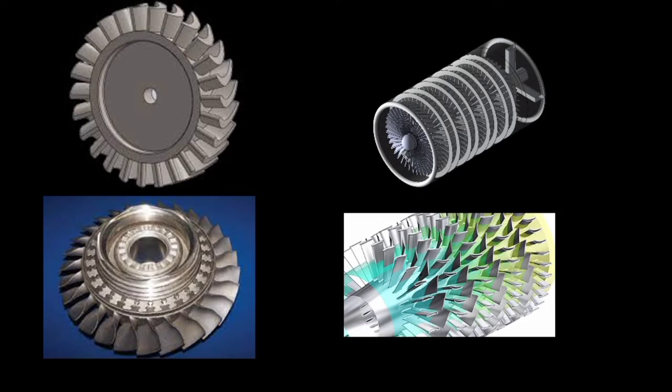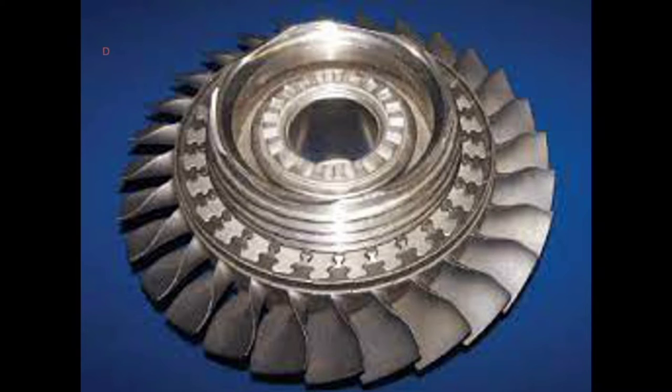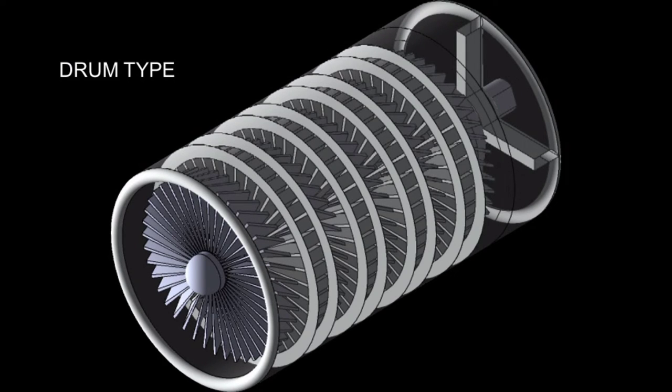There are two types of vane connection. Number one is the disc type, where vanes are connected to a disc by pins, and the disc is connected to the shaft with a spline method. Number two is the drum type, where vanes are directly connected to the shaft. I will describe further content in the next part. Thanks for your attention.